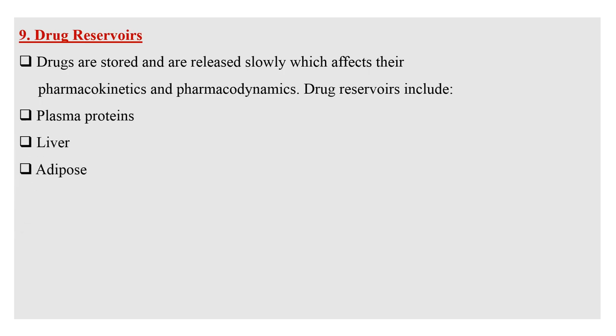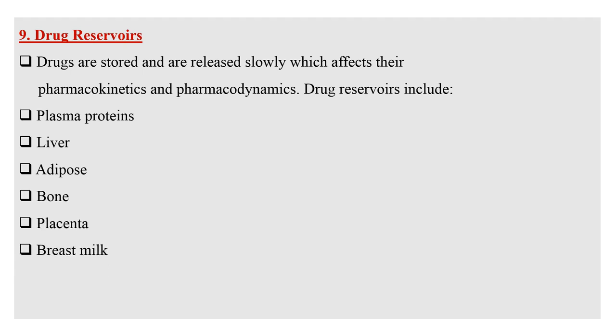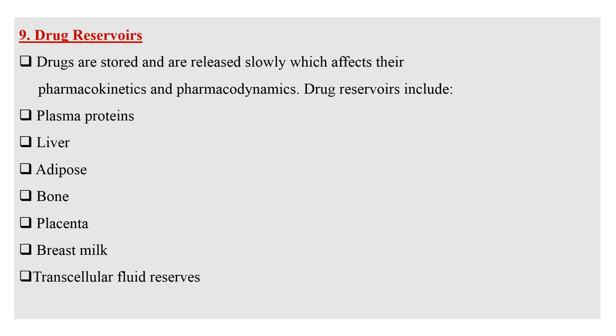Drugs are stored and released slowly, which affects their pharmacokinetics and pharmacodynamics. There are various drug reservoirs including plasma proteins, liver, adipose tissue, bone, placenta, breast milk, transcellular fluid reserves, and some other body tissues like eye, kidneys, skeletal muscles, and skin.